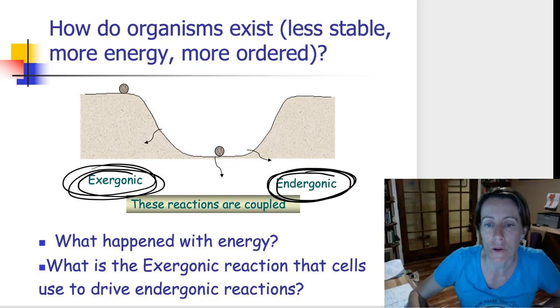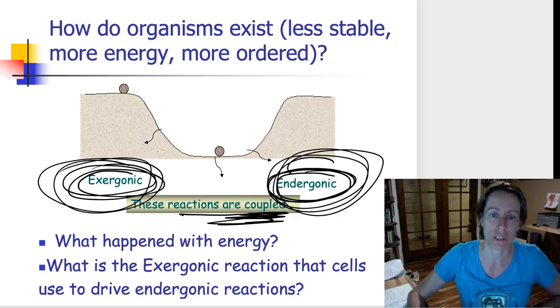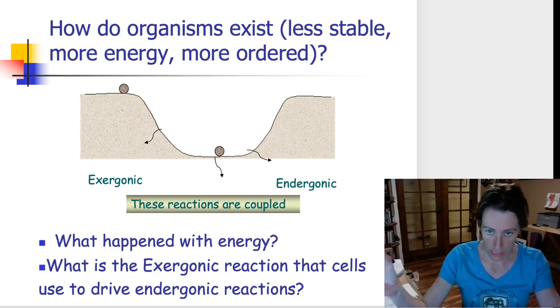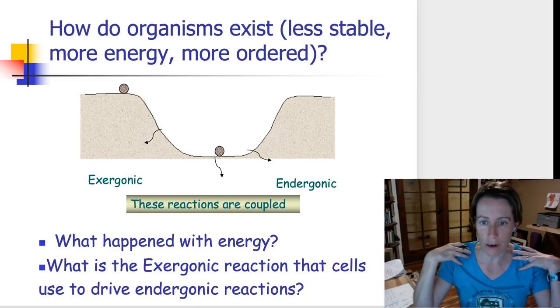And this is something that we call coupled reactions. They're coupled, they're joined together, because this one won't happen unless this one happens first. And this is the solution to how we create order in our bodies.